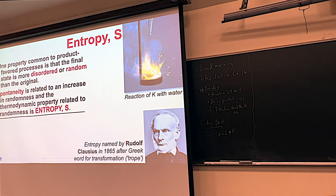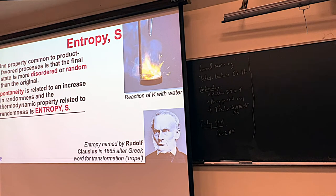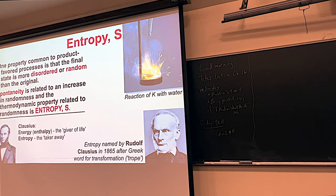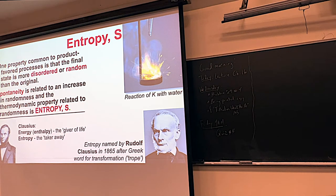Clausius — or Clausius-Clapeyron — was the first one to come up with the idea of entropy. 'Trope,' apparently, is Greek for transformation. He wanted entropy to be the opposite of enthalpy. Energy, he wanted to be the giver of life, and entropy to take it away. Entropy, arguably, is just as important as enthalpy, but up to this point we've only dealt with enthalpy. There are a lot of similarities between entropy and enthalpy, so we'll talk more about what entropy is.